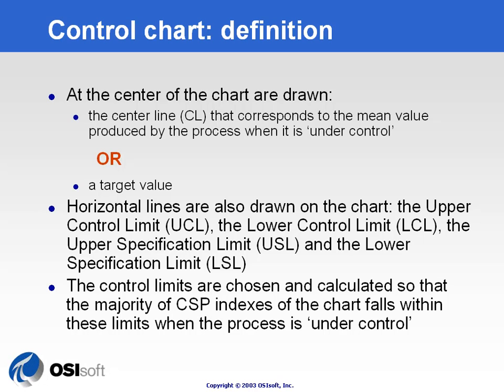These limits are either chosen or calculated so that most of the data — most of the samples or SPC aggregates you put into the chart — will fall within the limits when the process is considered under control. Very few points will be outside the limits, because as we know from theory, only 0.3% of points will normally fall outside the limits when we just have random variation occurring in the process.